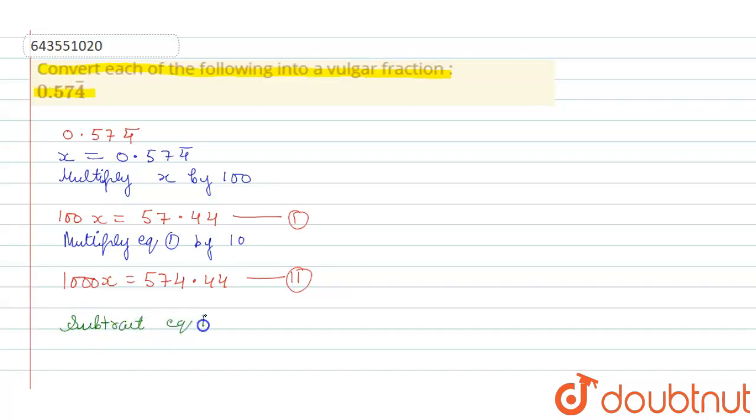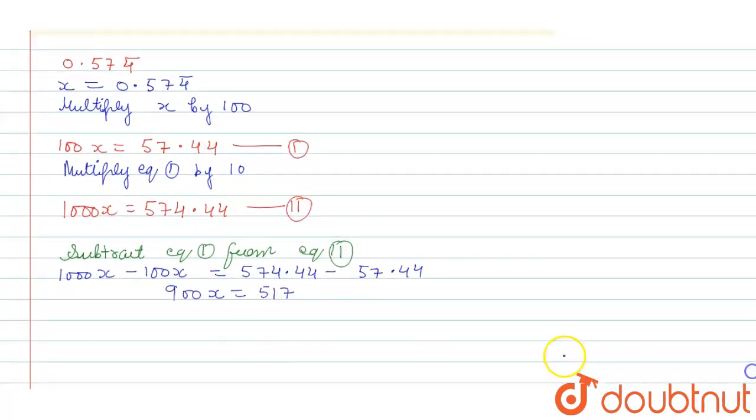Subtract equation first from equation second. We get 1000x minus 100x equals 574.44 minus 57.44. Then it becomes 900x equals 517.